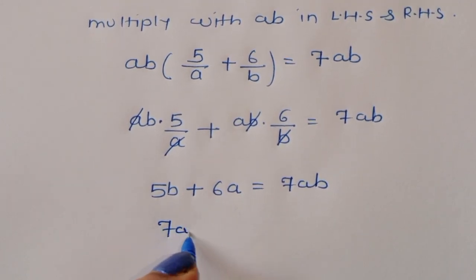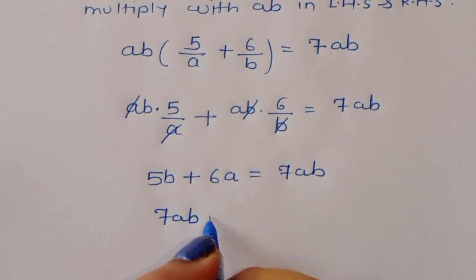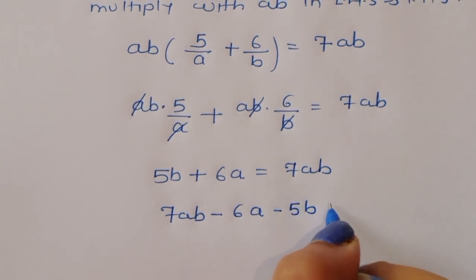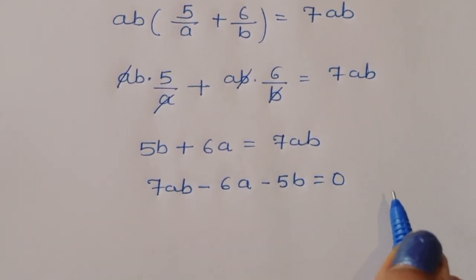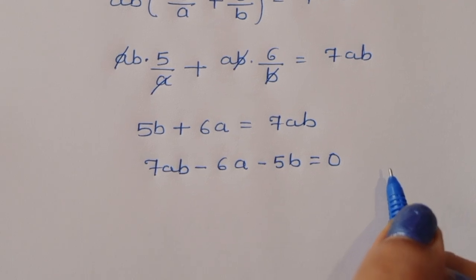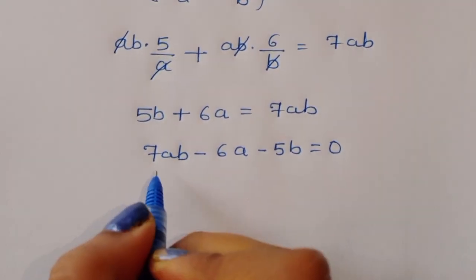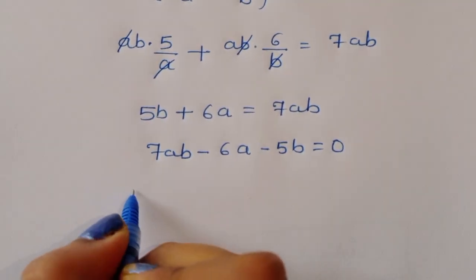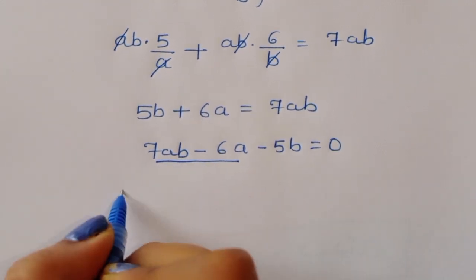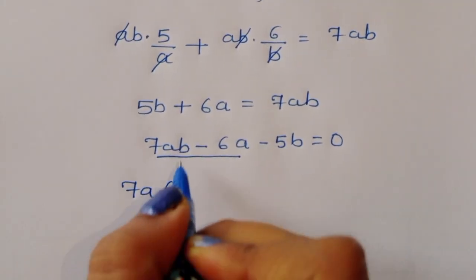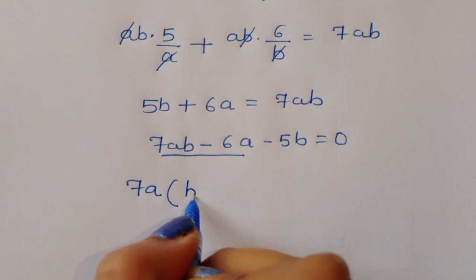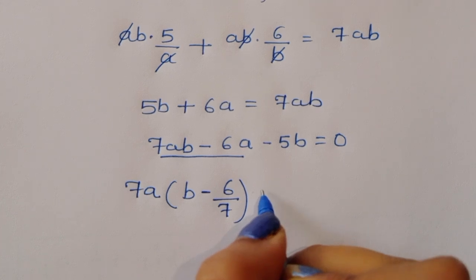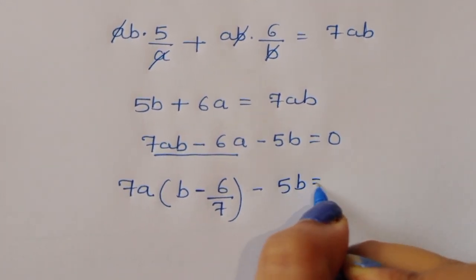So we can rewrite this as 7AB minus 6A minus 5B is equal to 0. Now we can take 7A as a common factor. If we take 7A common, we get 7A times (B minus 6 upon 7) minus 5B is equal to 0.